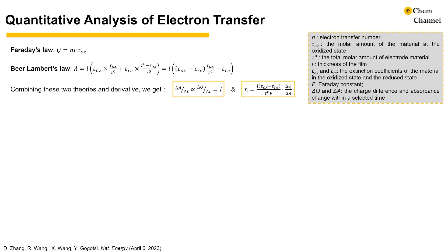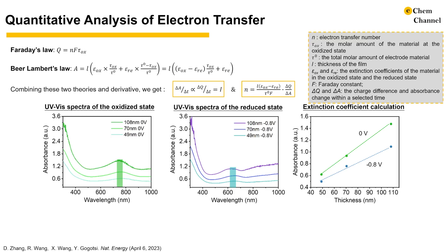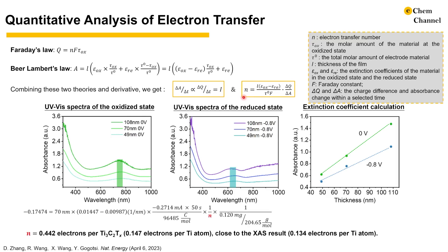Furthermore, by combining Beer-Lambert's law and Faraday's laws of electrolysis, we can derive a quantitative correlation between optical information and electrochemical information. This not only reveals the fundamental reason why the absorbance derivative correlates well with current, but also allows us to calculate the estimated electron transfer number in energy storage materials. Experimentally, it requires calculating the extinction coefficients of the materials at their oxidized and reduced states. In the example of Ti3C2 MXene in sulfuric acid, we used samples of three different thicknesses, with 0 V as the oxidized state and negative 0.8 V as the reduced state. By plugging in all values in the electron transfer number equation, we calculate 0.442 electrons per Ti3C2, equivalent to 0.147 electrons per titanium atom — very close to the 0.134 electrons per titanium atom from previous synchrotron X-ray absorption spectroscopy.